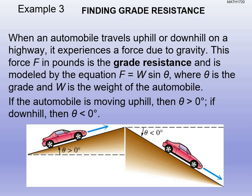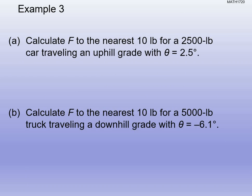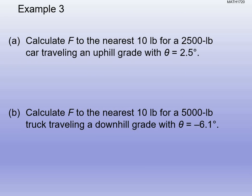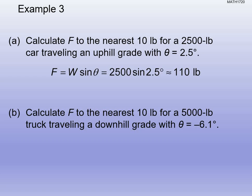Calculate the force to the nearest 10 pounds for a 2,500-pound car traveling an uphill grade of theta equals 2.5 degrees. Substituting into F equals W sine theta: F equals 2,500 times sine of 2.5. Put that in your calculator and the force is 110 pounds. It's similar to grade signs you see driving through the mountains — a 2% or 6% grade.